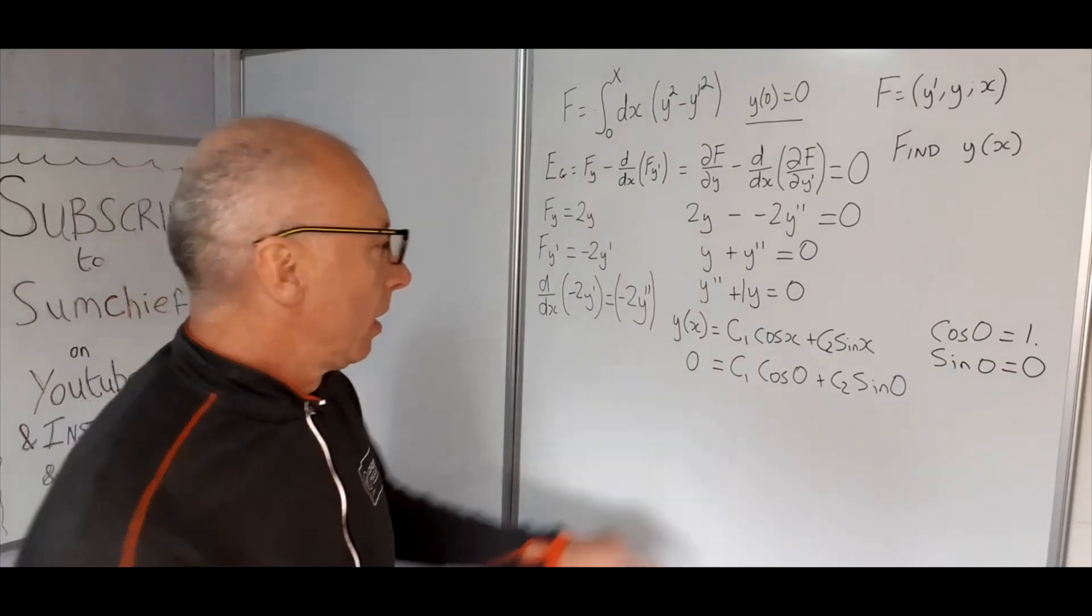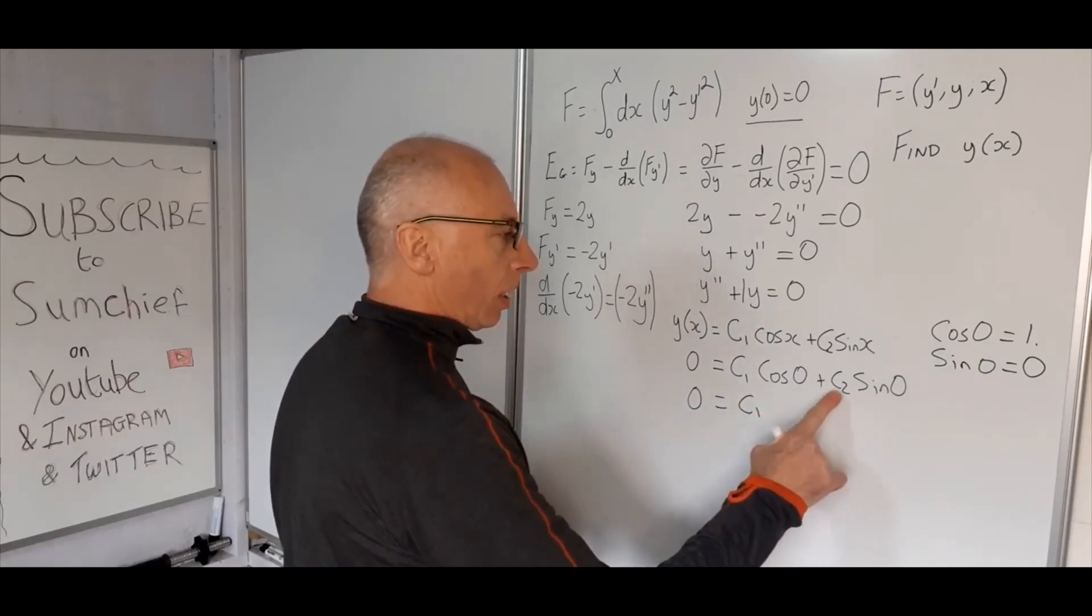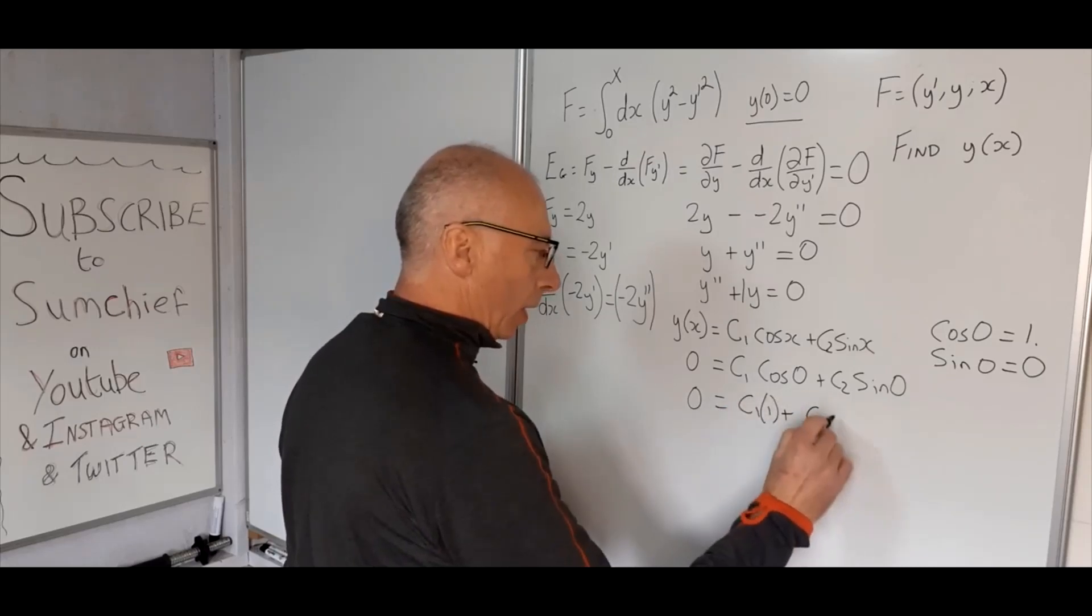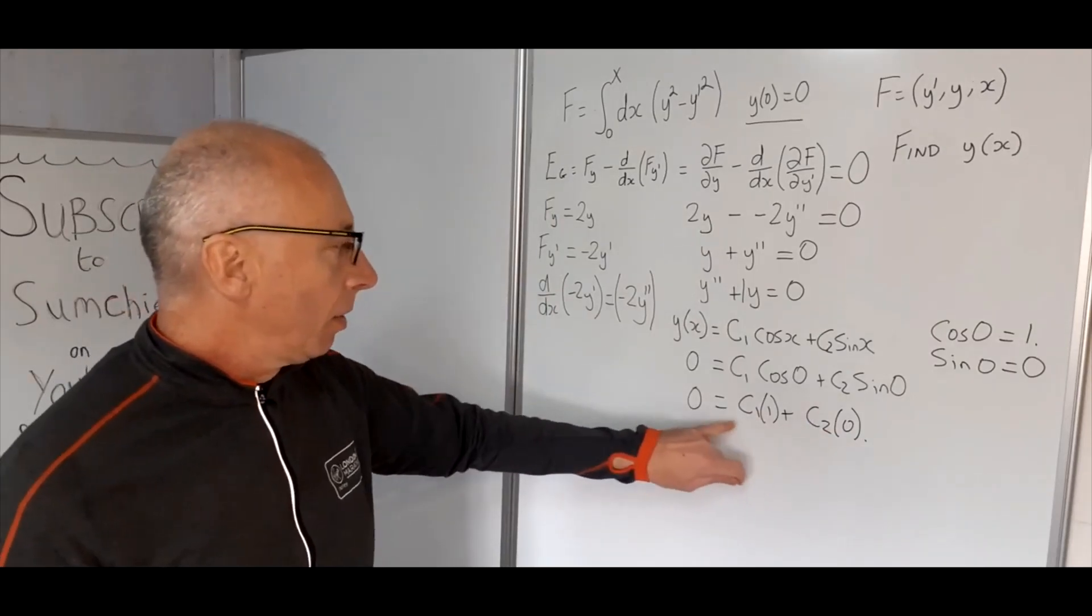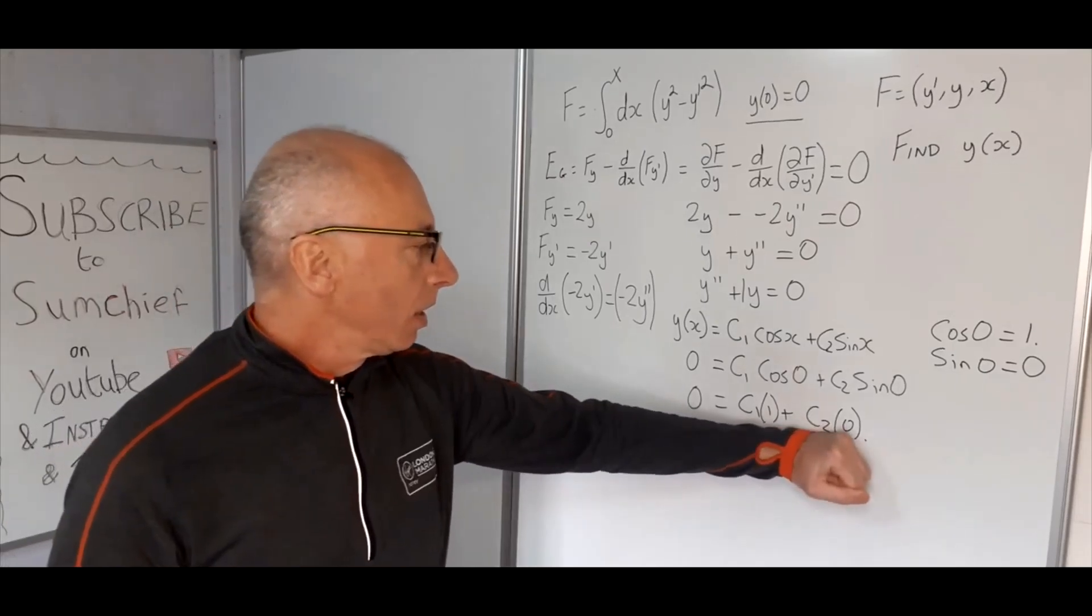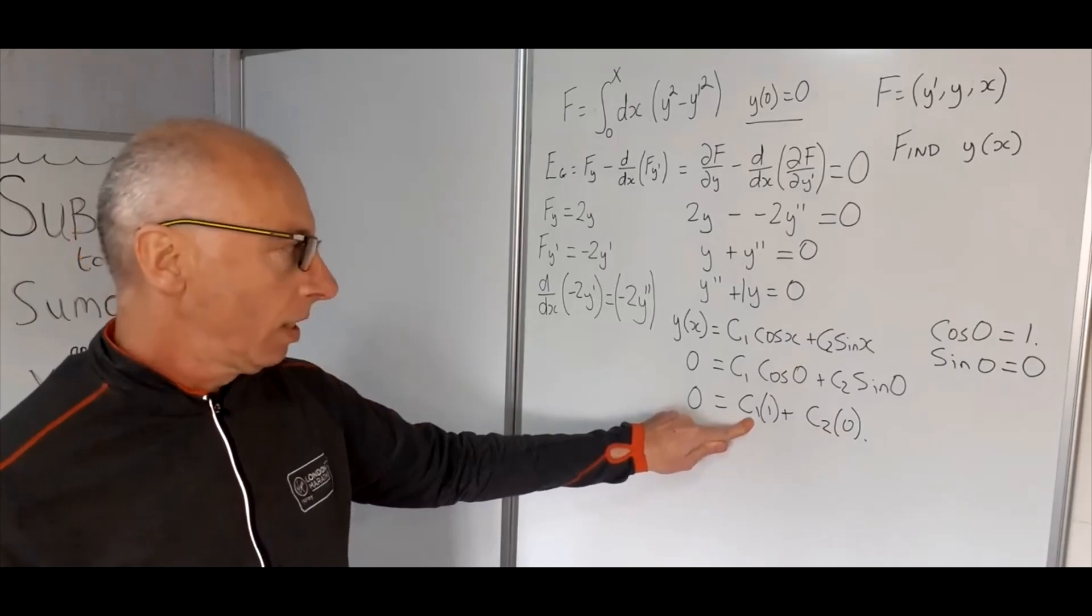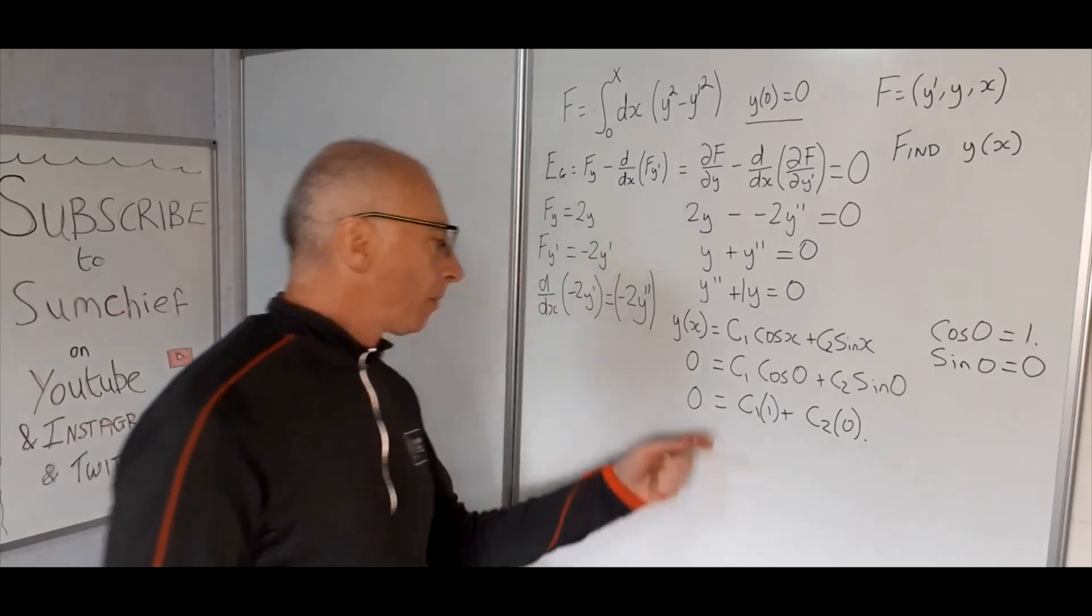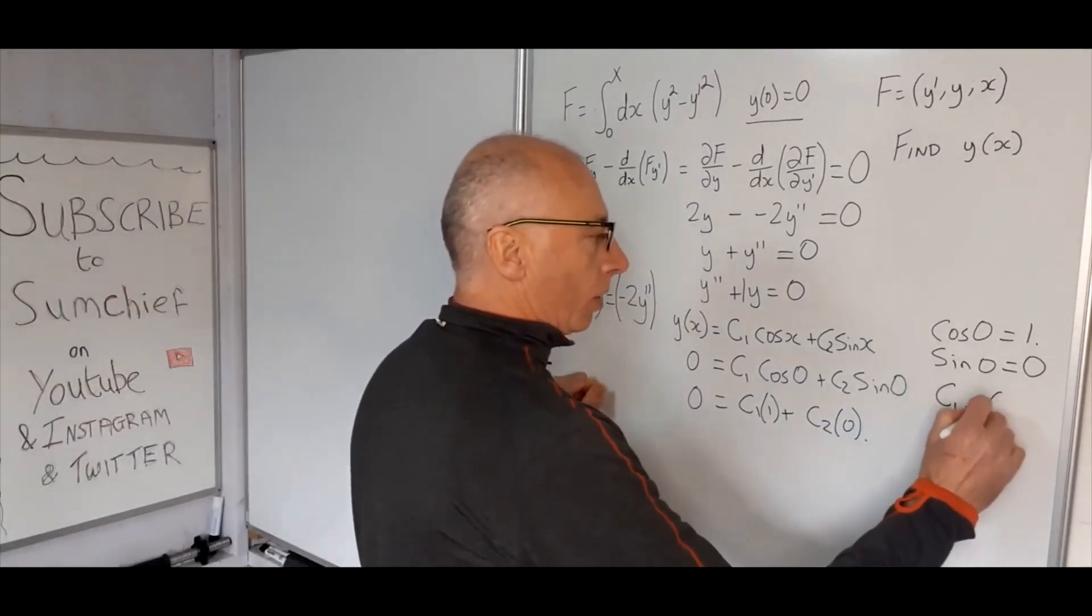So let's put that in there. So if 0 equals c1 plus c2—I'll just put more 1 there in there as well—c2 times 0. So this 0 equals c1 times 1 plus c2 times 0. So this is going to be 0. So therefore the only way that can happen is if c1 is 0. So c1 must be 0 to make this equation valid. So we've got c1 equals 0.